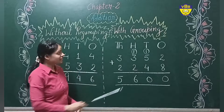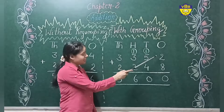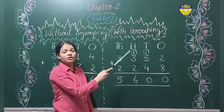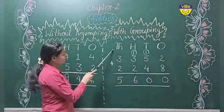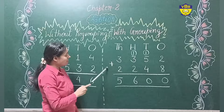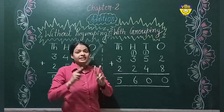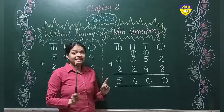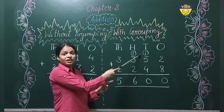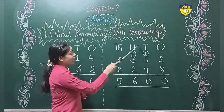Now we will learn about regrouping. So same process — I will write the place values: ones, tens, hundreds, thousands. On the ones place I have taken two and eight. On the tens place: five and four. On the hundreds place: three and two. And on the thousandths place: three and two. Now I am going to add this. So I will open two fingers and count after eight — then ten. So this is ten. So I have written zero here and carry one. Get it? So now I am going to add all of this.